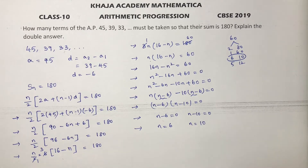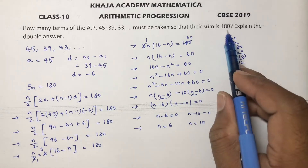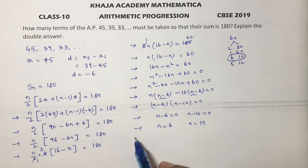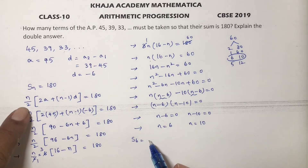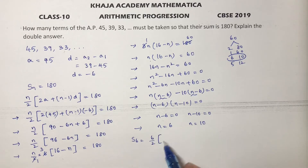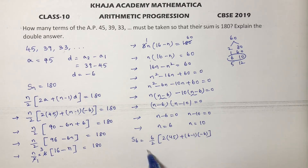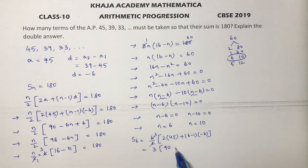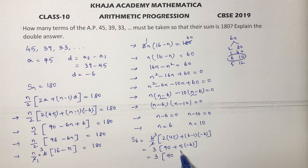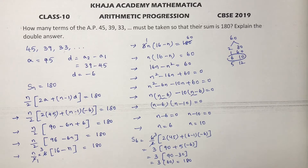Both values of n are positive, which is why we need to explain the double answer. Both sum of 6 terms and sum of 10 terms equal 180. Verifying S6: 6 by 2 into [2 times 45 plus (6 minus 1) into minus 6] equals 3 into [90 minus 30] equals 3 times 60 equals 180. So sum of 6 terms is 180.